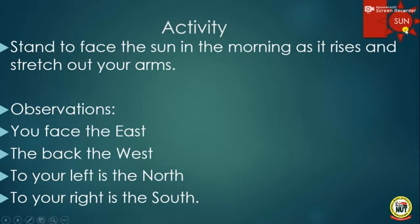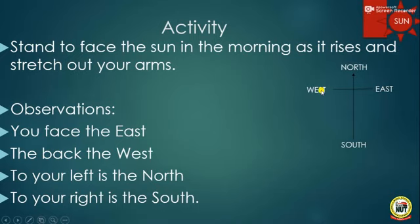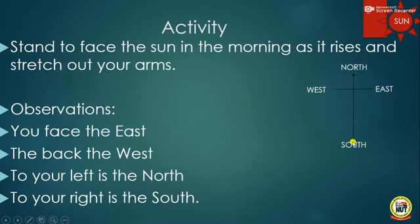Now, this is the sun — we are assuming the sun is rising in the morning. I want to indicate the cardinal points on this arrow. This is East because that is where the sun is rising from. Behind you is the West. Your two hands are stretched out — if you face the sun in the morning that is East, then behind you is West, your left is North, and your right is South. This is how you can determine cardinal points should you go to a place and discover you are lost.